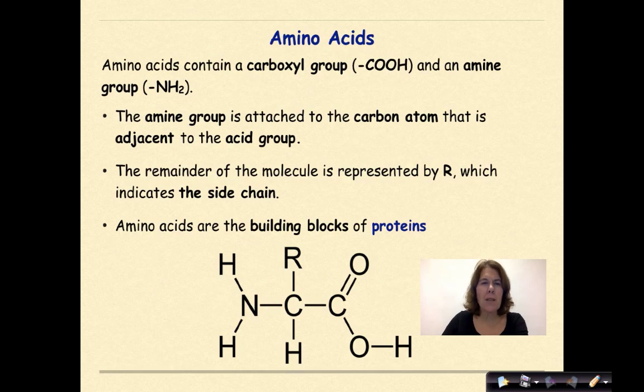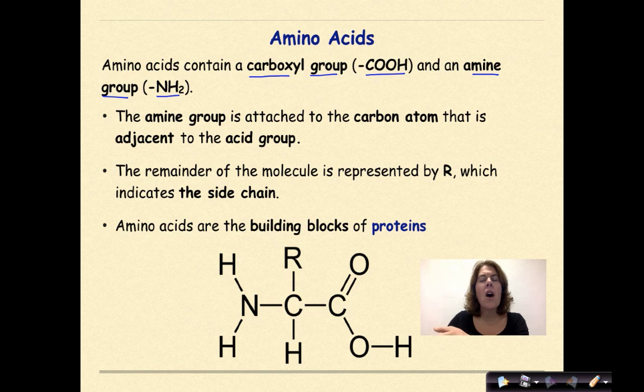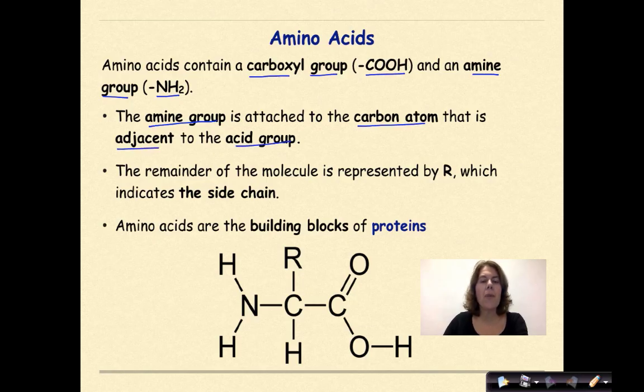Now let's talk about amino acids. Amino acids contain a carboxyl group, otherwise known as a COOH group, and an amine group, which we know is NH2. Really, we know it's ammonia, NH3, but we're removing one of those hydrogens because we're going to be sticking some type of alkyl group to that. The amine group is attached to the carbon atom that is adjacent to the acid group. The remainder of the molecule is represented by R, which indicates the side chain. And there's a number of different side chains, which makes each amino acid different from another one. Remember that amino acids are the building blocks of proteins.